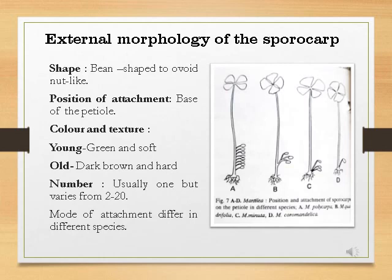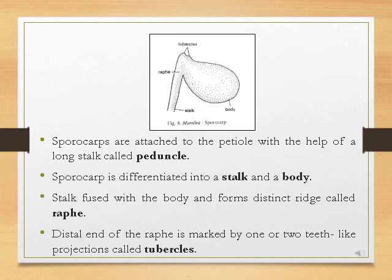The mode of attachment of sporocarp to the petiole also differs in different species. In Marsilea polycarpa, many sporocarps are attached on one side of the petiole in a single vertical row. In Marsilea quadrifolia, the basal parts of the stalks of sporocarps are fused in groups, and each group is attached to the petiole by a common stalk. In Marsilea minutia, the stalks of the sporocarps, though free, are attached to the petiole at a single point. In Marsilea coromandelica, there is a single sporocarp.